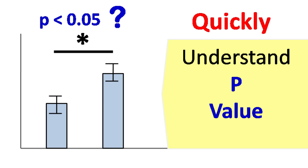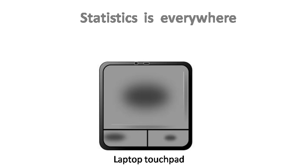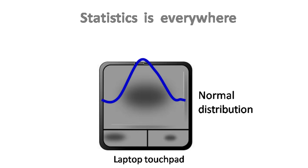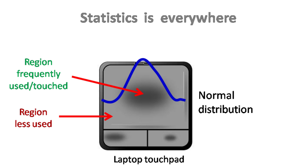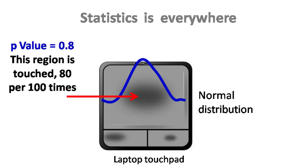Today I will be talking about p-value and what it represents in statistics. Statistics is everywhere. If you see this touchpad carefully, what you see is a normal bell-shaped curve. Let's say the p-value in this region is 0.01 — this means I touch over here one in a hundred times. Let's say the p-value in this region is 0.8 — this means 80 out of 100 times I'm going to touch in this region.